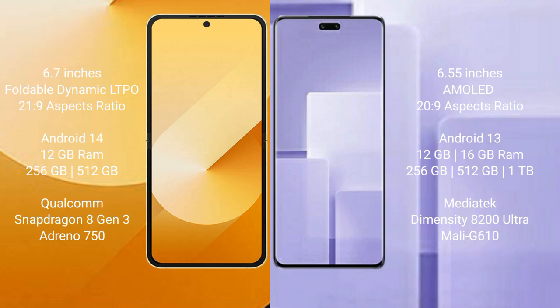Samsung Galaxy Z Flip 6 comes with 12GB RAM and 256GB or 512GB internal storage, with a Qualcomm Snapdragon 8 Gen 3 processor. Xiaomi CB3 comes with 12GB or 16GB RAM and 256GB, 512GB, or 1TB internal storage, powered by a MediaTek Dimensity 8200 Ultra processor with GPU model G610.